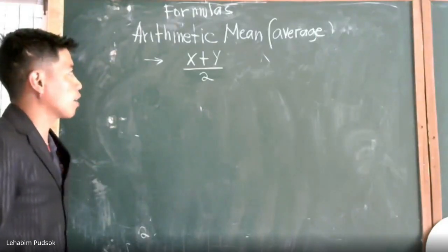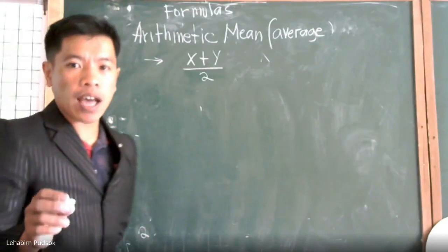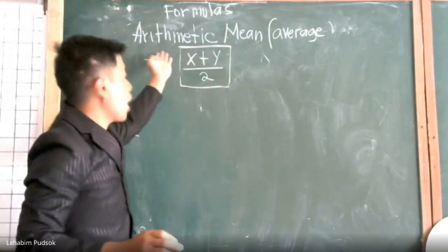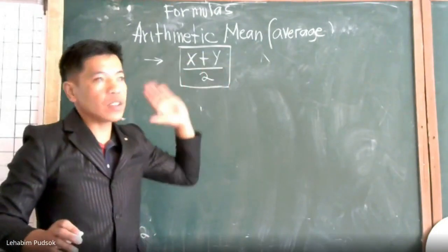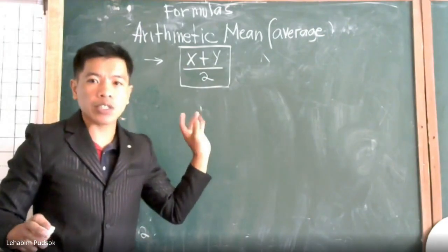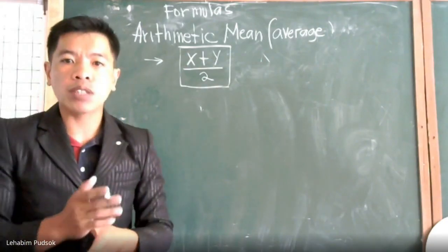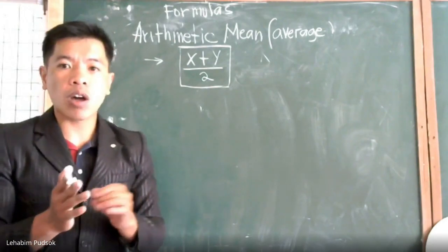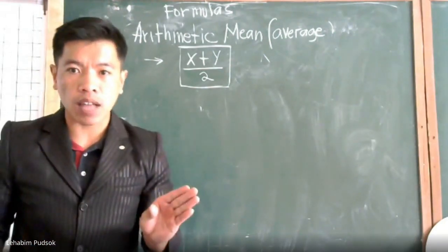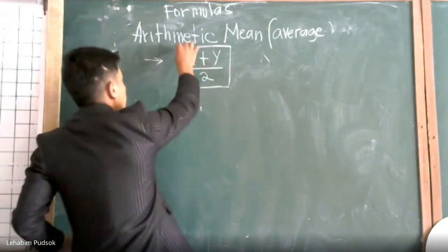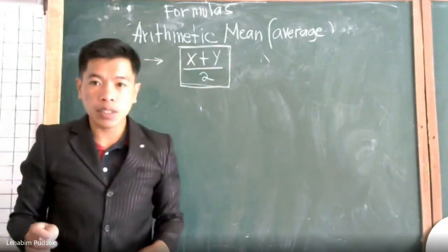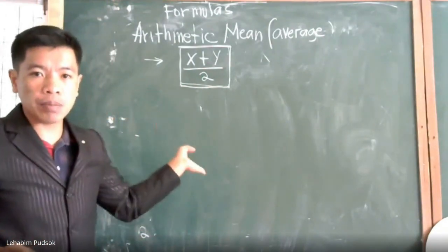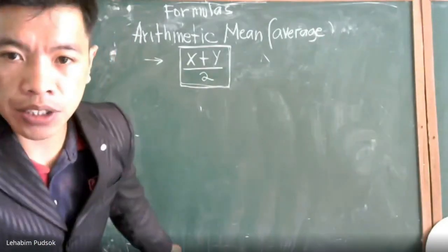So what is an arithmetic mean? An arithmetic mean is basically average. If you know how to get the average, that is exactly the arithmetic mean. In your past grade levels, you discussed already statistics about the mean, the median, and mode. So if we say mean or arithmetic mean, we are pertaining to average or averaging.